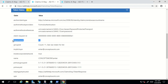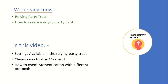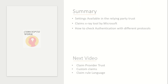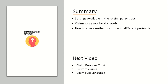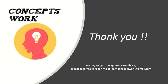I would request you to try as many things as possible, and if you have any questions, please feel free to ask in the comment section. Let's talk about a quick summary: we checked different settings available in the relying party trust, and we talked about the Claims X-Ray tool by Microsoft and how to check authentication with different protocols. In the next video, I'm going to talk about claim provider trust and custom claims that can be sent with the help of claim rule language. Please subscribe, and reach me at learnconceptswork@gmail.com. Thank you!